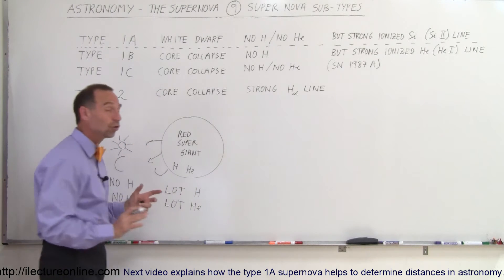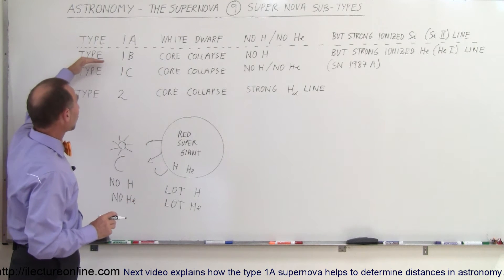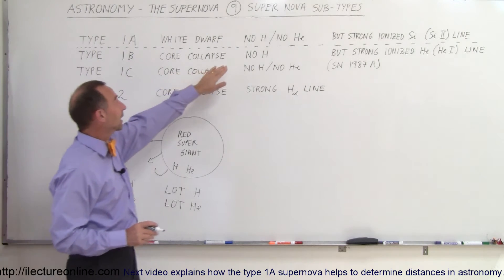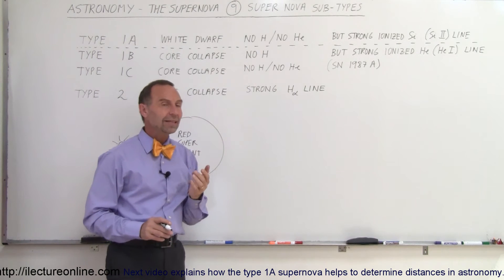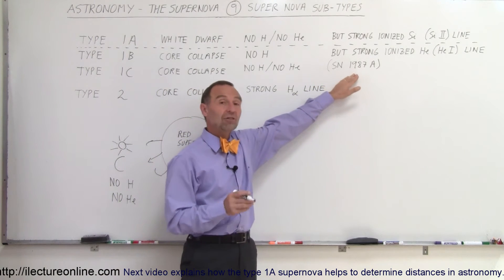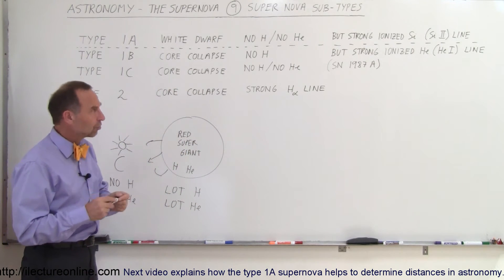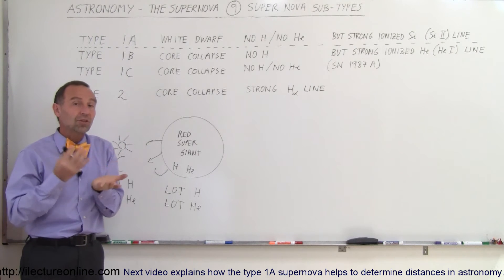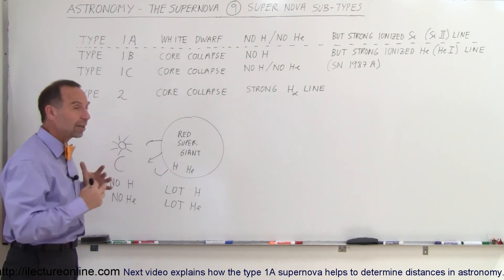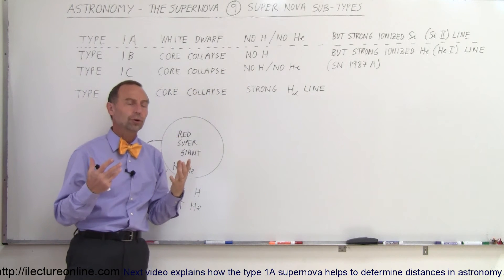Those were the traditional types, but what we found was that in some cases, especially like in the Type 1b and Type 1c, which we still knew were core collapse stars, in the case of the Type 1b there's no hydrogen to be seen, and in the case of the Type 1c there's no hydrogen and helium to be seen. For example, the supernova that occurred in the Large Magellanic Cloud in 1987 was one of those types—it was a Type 1c. Normally we associate 1a with white dwarfs, and it's a misnomer to think that 1b and 1c are also white dwarf stars. No, they're not. They are large, super large red giants that explode.